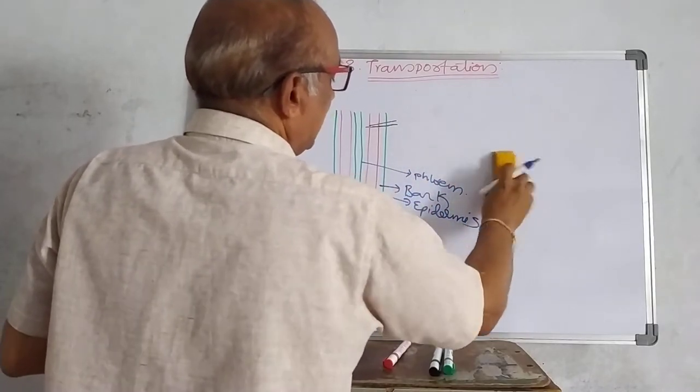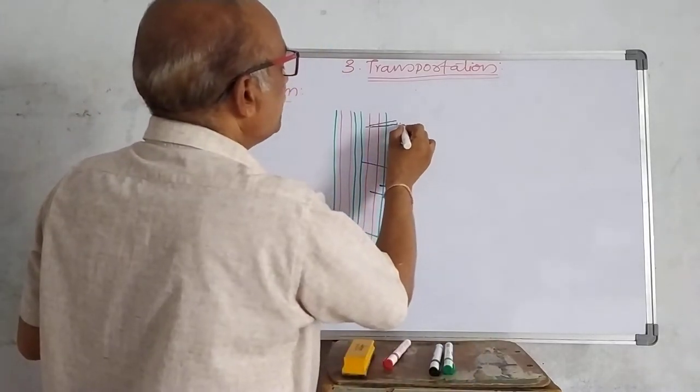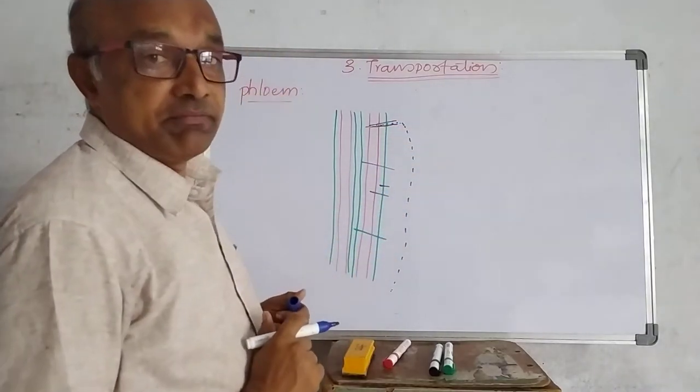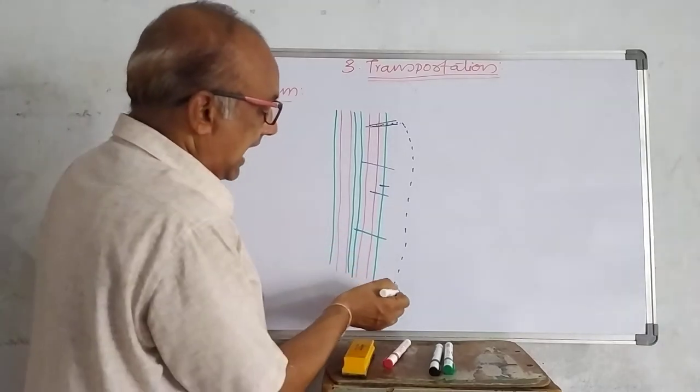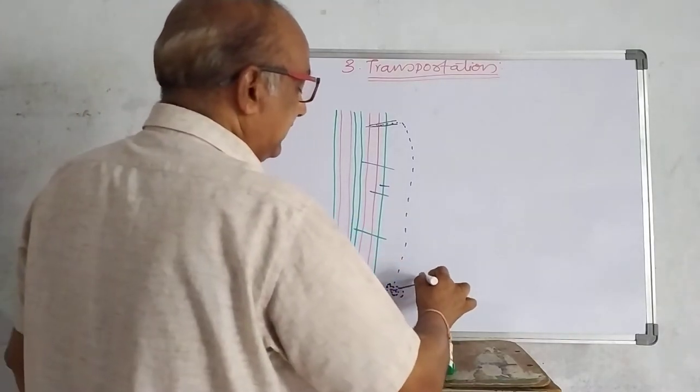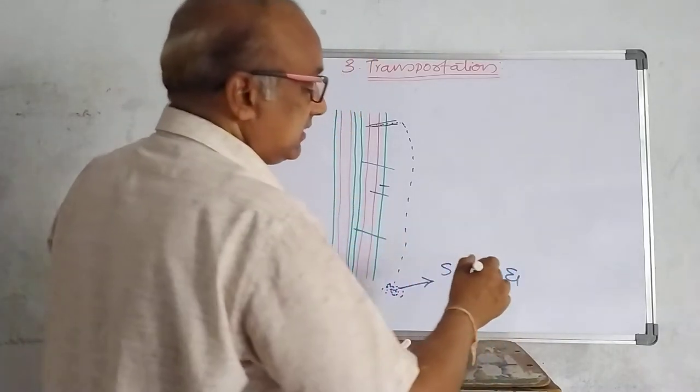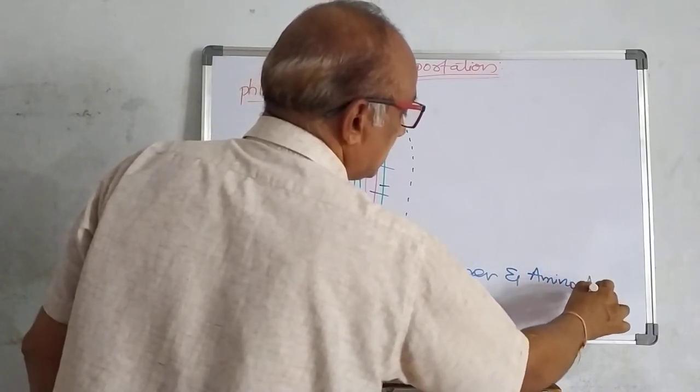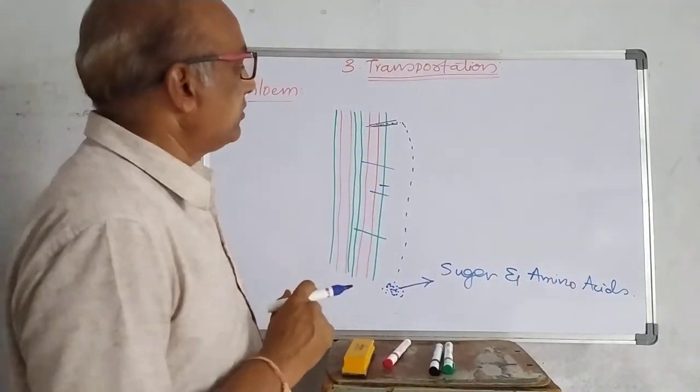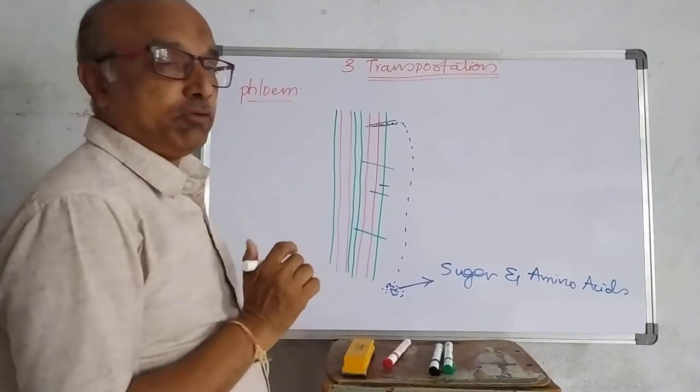There was a fluid oozing out and falling near the base of the soil or near the base of the stem. And this fluid is collected by the biologists and tested in the laboratory. They found that the fluid contains sugar as well as amino acids. By this, they understood that the cut portion of the proboscis is pierced up to the phloem tissue.